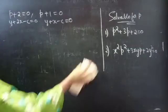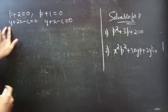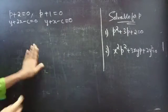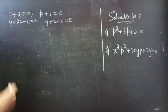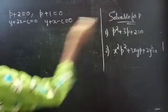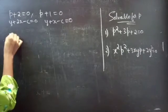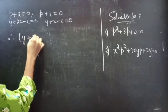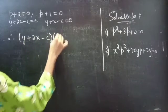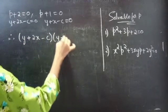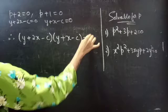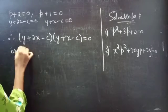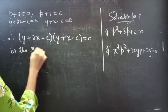The combined form of these two solutions will be the required solution for the first differential equation. Therefore, (y plus 2x minus c)(y plus x minus c) equals to 0 is the required solution.